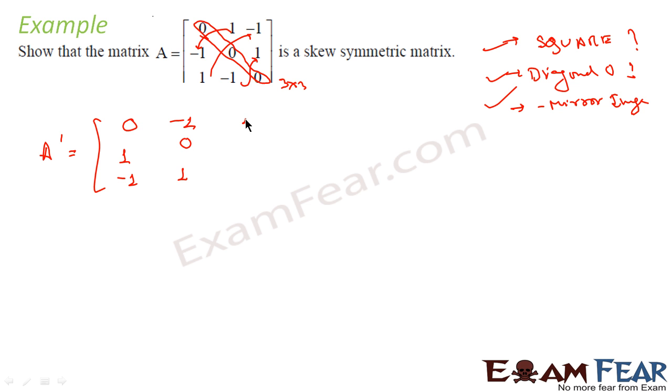Third row: 1, minus 1, and 0. So if you observe and compare these two: this is 0, this is 0. Minus 1 becomes 1, 1 becomes minus 1. 1 becomes minus 1, 0 and 0.